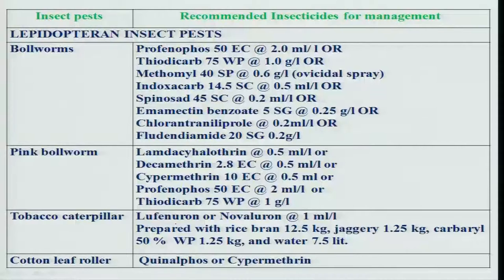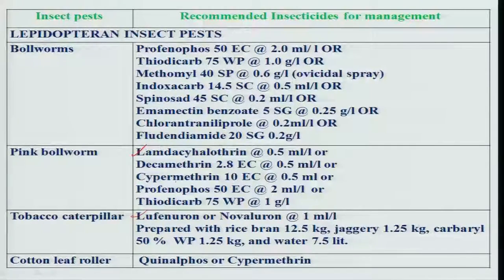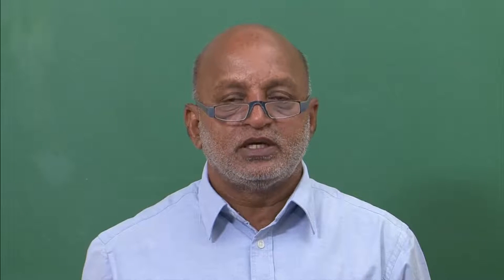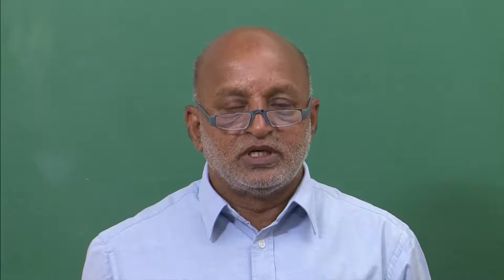There is a list of insecticides effective against the bollworm complex. For pink bollworm, some insecticides are recommended exclusively, and there are also options for tobacco bollworm. Pink bollworm has become widespread on BT cotton across different states including Gujarat, Maharashtra, Tamil Nadu, Karnataka, and Andhra Pradesh.